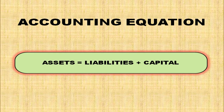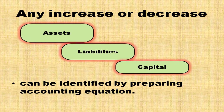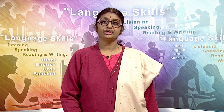Accounting equation: Assets = Liabilities + Capital. The accounting equation is affected by every business transaction. Any increase or decrease in assets, liabilities, or capital can be identified by preparing the accounting equation. Every business transaction satisfies the dual aspect concept of accounting — every transaction affects two aspects. The accounting equation also serves as the basis for preparing the balance sheet.